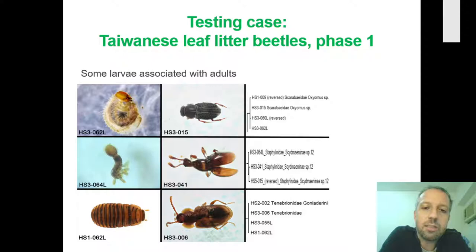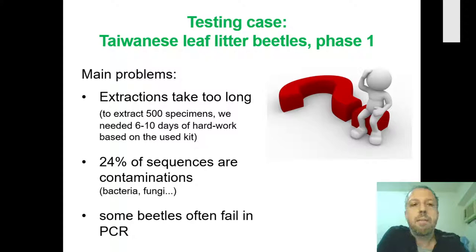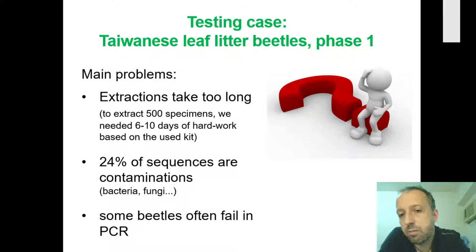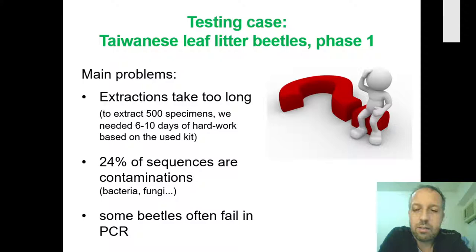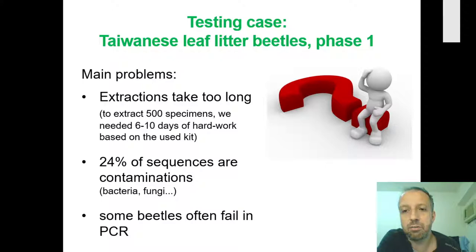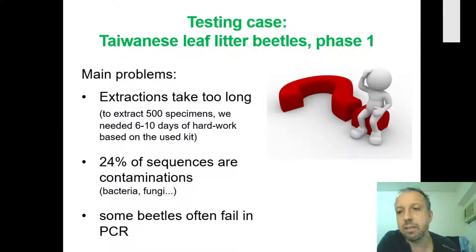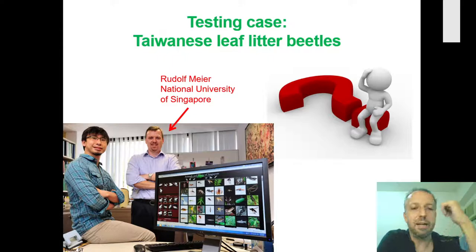We were able to associate some adults with larvae — for example this Oxiomus, which we will talk about later, and this Cidmanine with a weird ball-like end of abdomen in the larvae, now in the hands of Pavel Jaloshinsky. But we also got many problems. One methodological problem was that extraction takes too long: for 500 specimens from six leaf litter samples, you need six to ten days of hard work from early morning to late night. We also got many contaminations from bacteria or fungi, and many beetles failed to amplify in PCR.